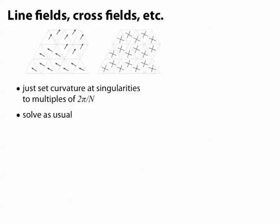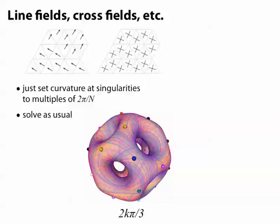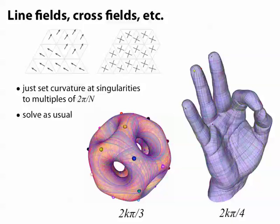And then we solve as usual. Nothing else changes. So here's an example of 2π over 3 and 2π over 4.